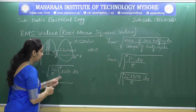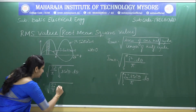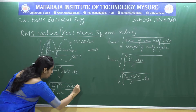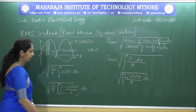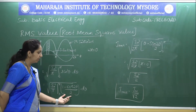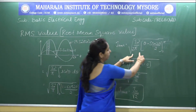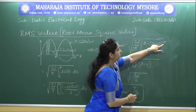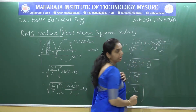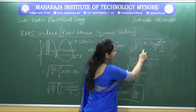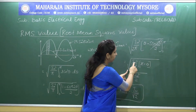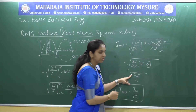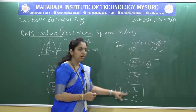Before integrating, we convert sin²(θ) using the identity: sin²(θ) = (1 − cos 2θ)/2. Integrating this expression with respect to θ and applying the limits 0 to π, the term sin(2π) becomes 0. We are left with π, so the expression simplifies to I_M²/(2π) × π. The π cancels, giving the square root of I_M²/2. Therefore, I_RMS = I_M/√2.